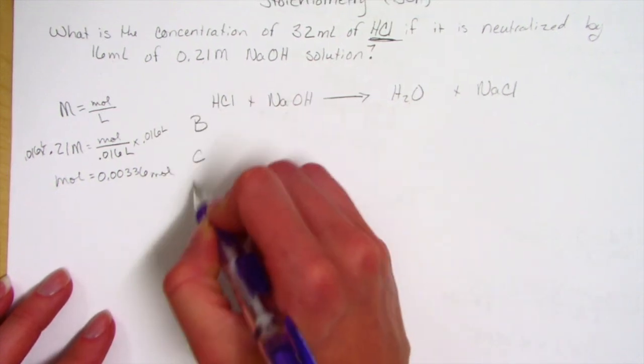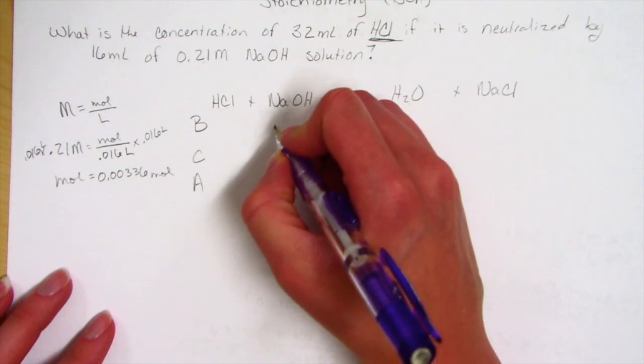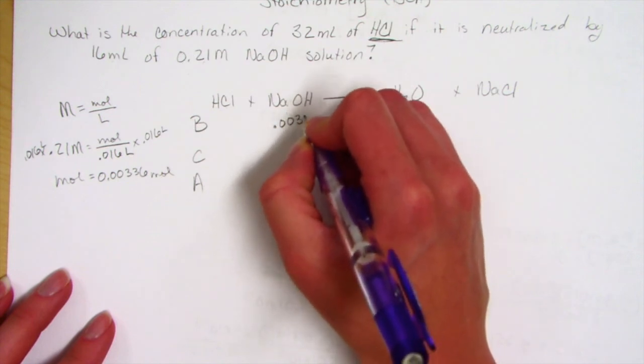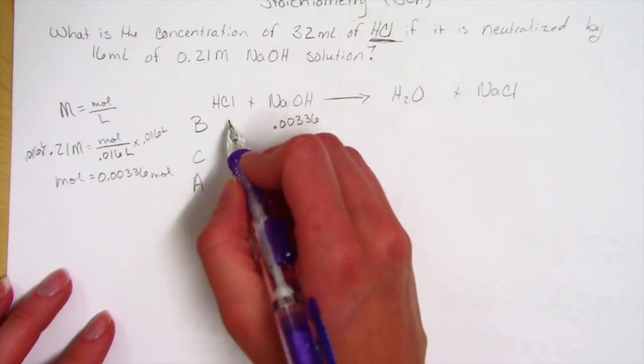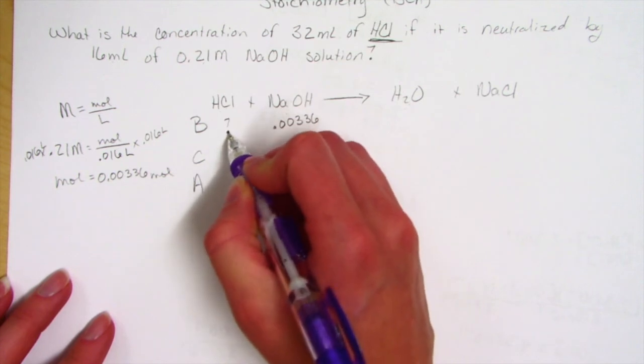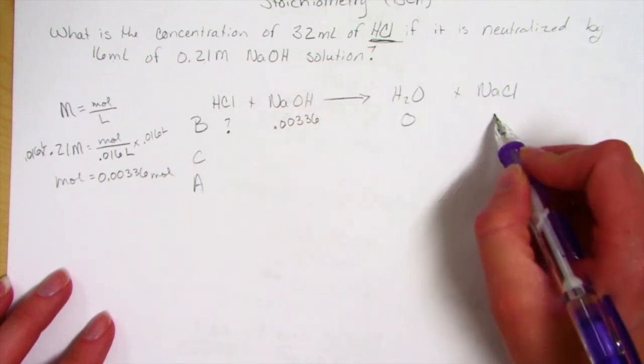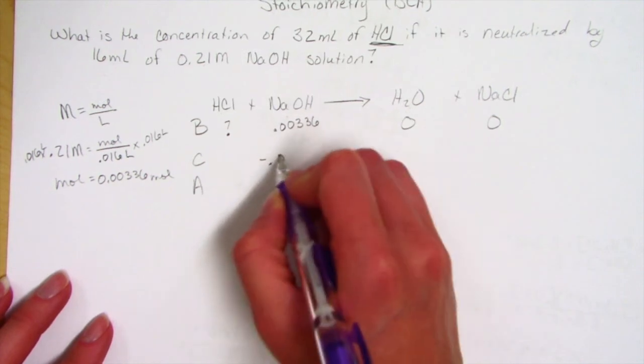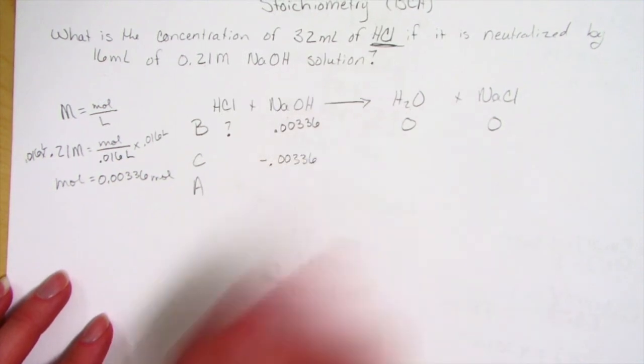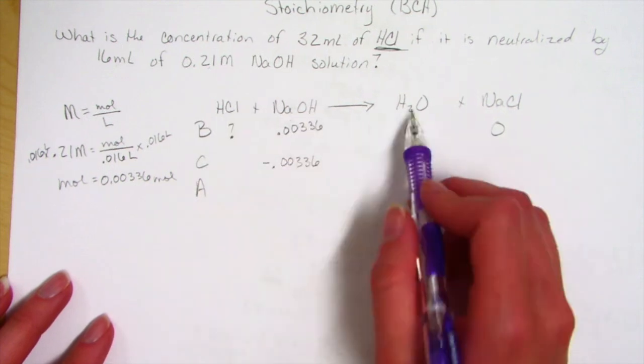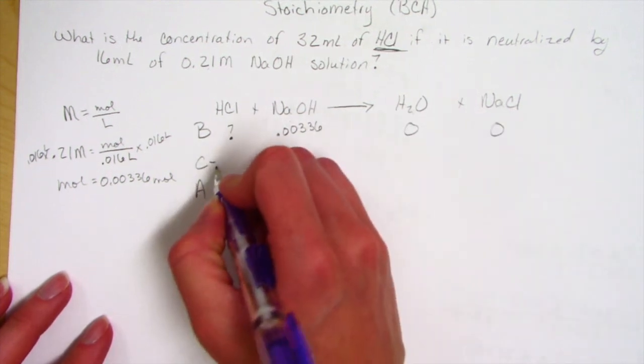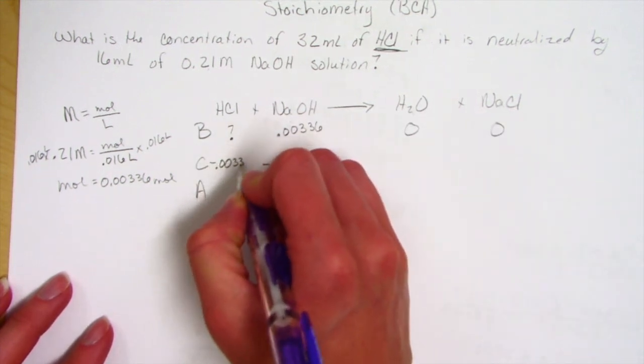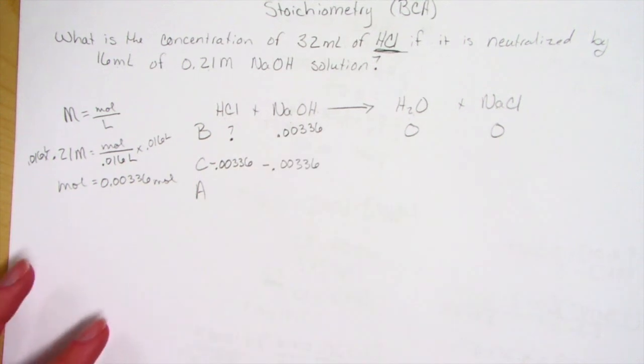So that's going to go in our BCA table: 0.00336. We are looking for our unknown—what we have to begin with. We also have zero of our product. Throughout the reaction, we're going to use up all of this. Since it's a one-to-one ratio, we have to use 0.00336 moles of the HCl.